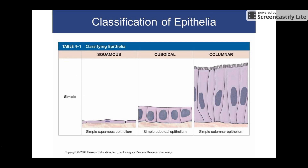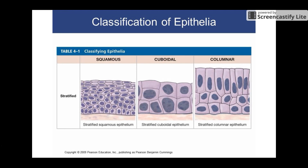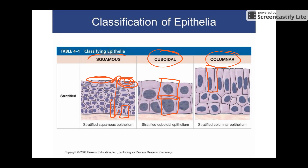So here are squamous — squished cells; cuboidal — cubes; and columnar — column-shaped. Pretty easy. And then here we have stratified layers of all of those, so now there are multiple layers. These are stratified squamous — you name it by the outside portion, so even though they look like cubes at the bottom you name them by the squished cells on the outside. These are stratified cuboidal — stacks of cubes — and this one would be called stratified columnar, named by the exposed outer edge.